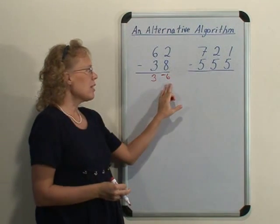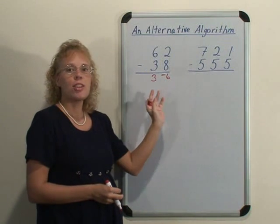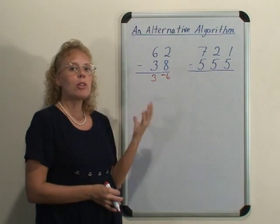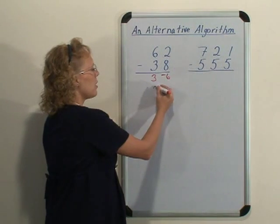Now this result is seen as 3 tens take away 6. It's 30 minus 6 so there's one more step you have to do mentally, 30 take away 6 in your mind, and it leaves 24.